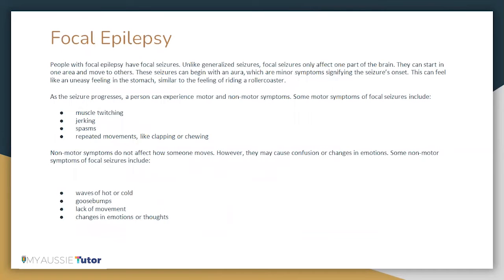Focal epilepsy. People with focal epilepsy have focal seizures. Unlike generalized seizures, focal seizures only affect one part of the brain and can start in one area and move to others. These seizures can begin with an aura, which are minor symptoms signifying the seizure's onset — this can feel like an uneasy feeling in the stomach, similar to the feeling of riding a roller coaster. As the seizure progresses, a person can experience both motor and non-motor symptoms. Motor symptoms of focal seizures include muscle twitching, jerking, spasms, and repeated movements like clapping or chewing.